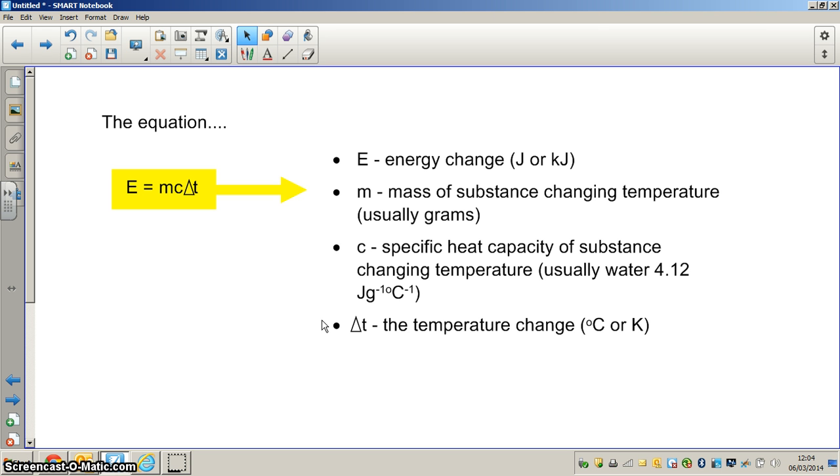C stands for specific heat capacity, again of the substance changing temperature, and most experiments that you encounter at A level usually use water as the substance which changes temperature. C, the specific heat capacity, is always given in the question, and if it's water it's 4.12 joules per gram per degree C. You will not have to remember this because it will be given in the rubric. Delta T is the temperature change that occurs in the experiment and that can be measured in degrees C or Kelvin.